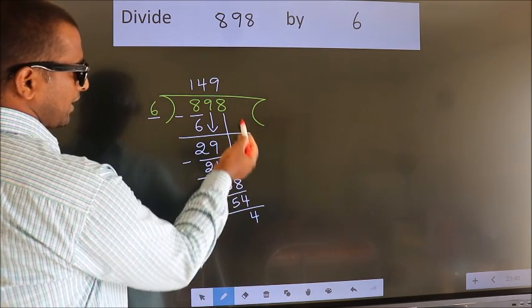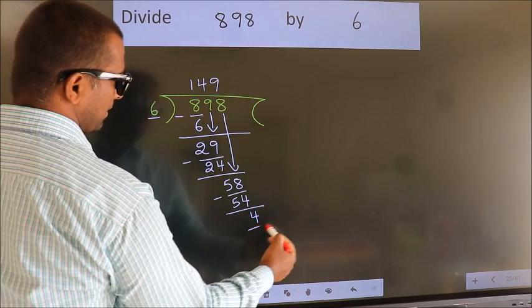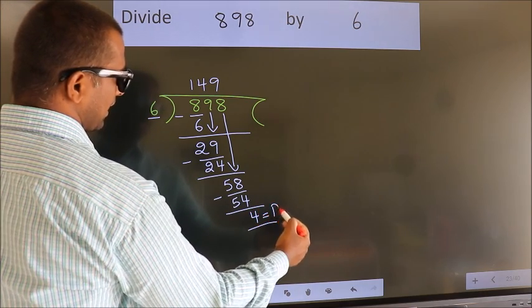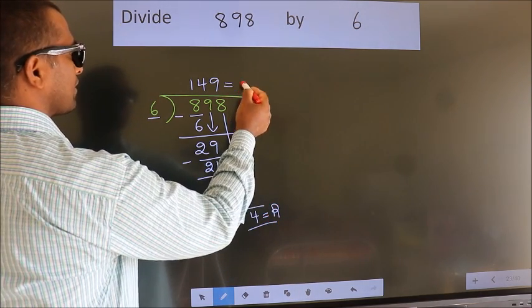No more numbers to bring it down. So we stop here. This is our remainder. This is our quotient.